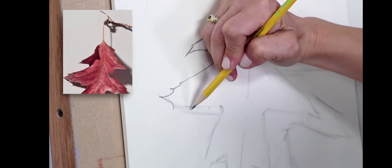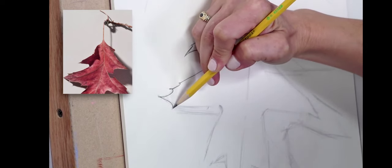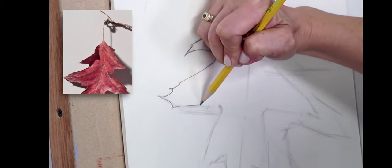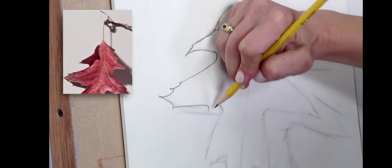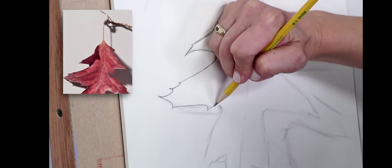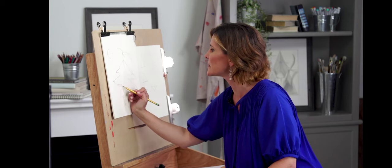Again, just kind of going point to point and observing. Looking with my eyes, following the edge and the leaf. And then trying to make that same shape with my pencil. So that's one tip for making it look naturalistic.